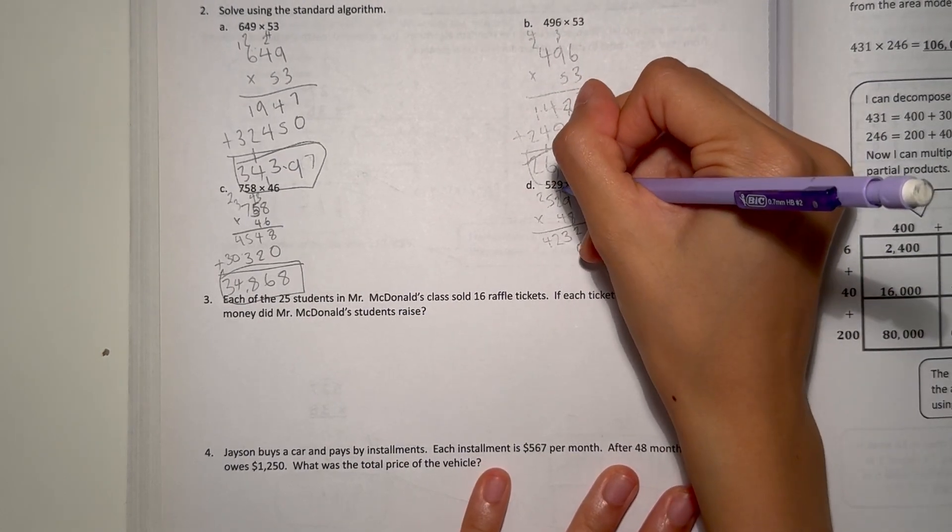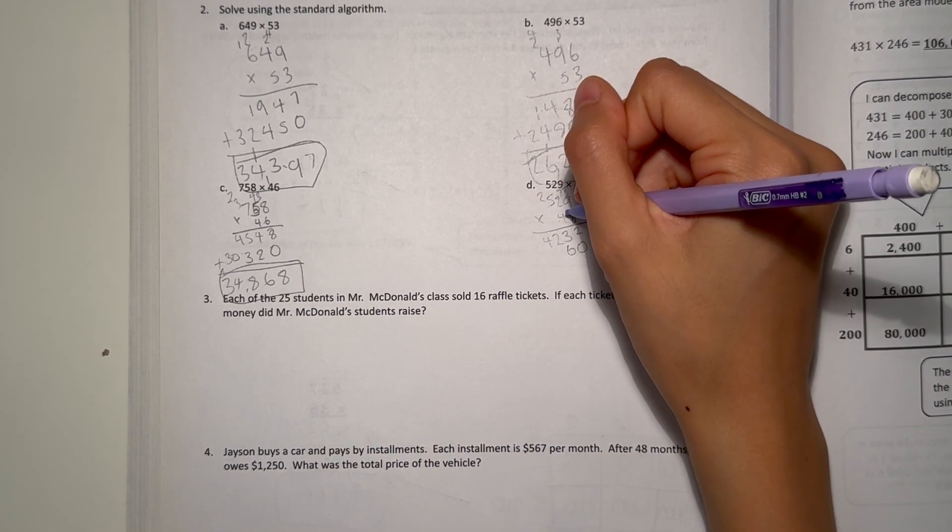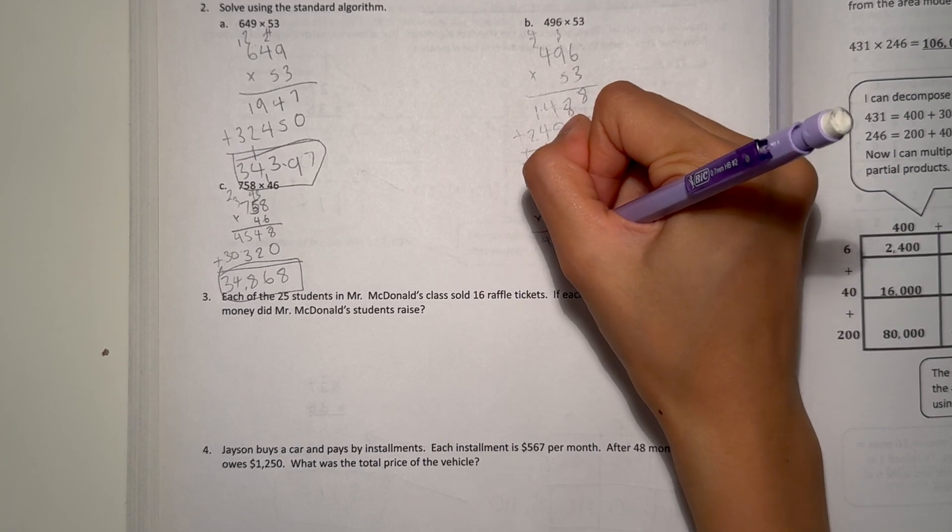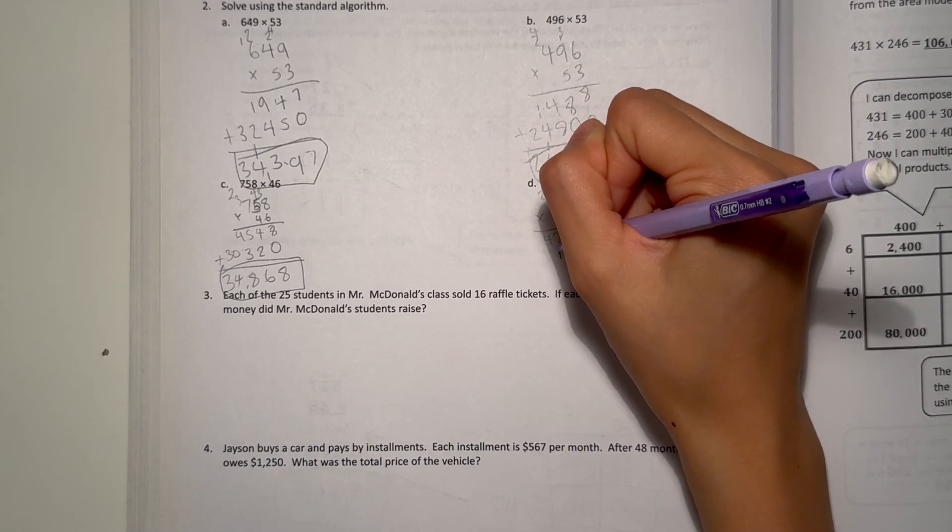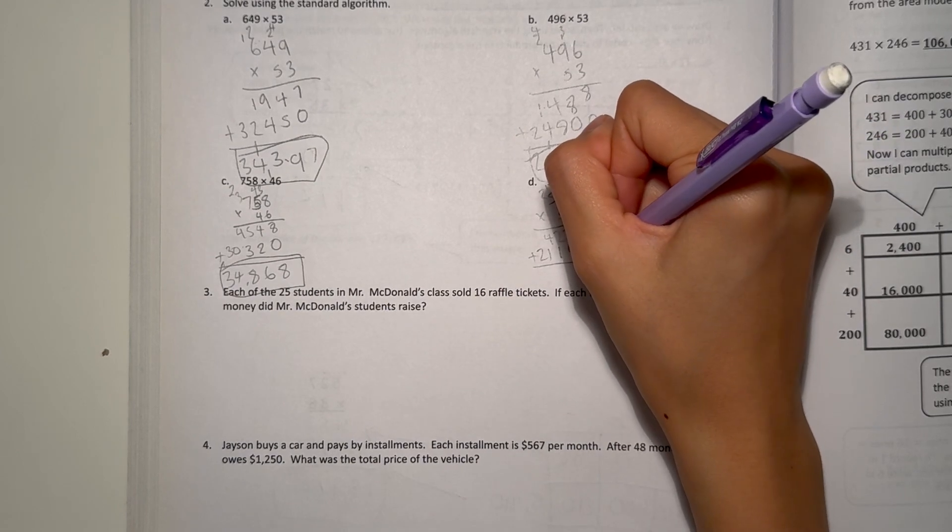9 times 4 is 36. 2 times 4 is 8 plus 3 is 11. And 5 times 4 is 20 plus 1 is 21.